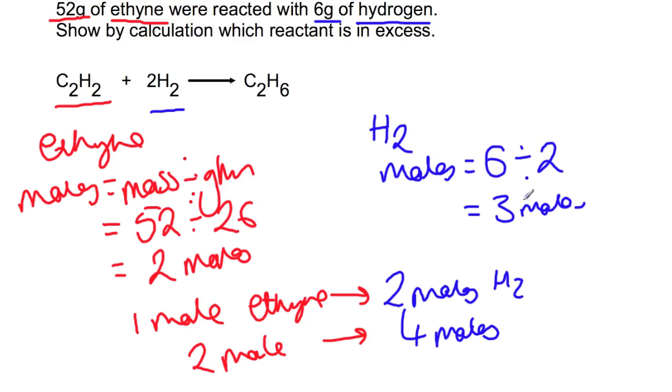If we compare this to what we've just calculated, we can see that we don't have enough H2, which means that your hydrogen is your limiting reagent and the ethyne is in excess.